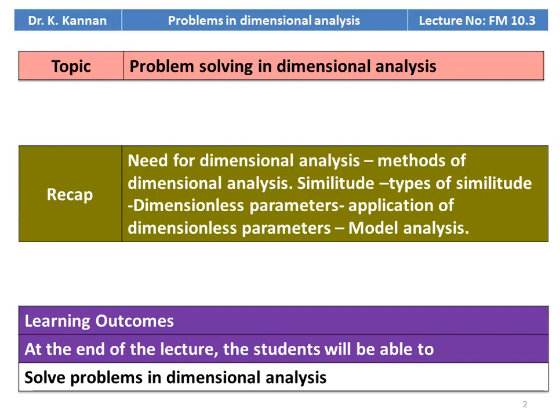We recap from the earlier lecture. In the earlier two lectures, we discussed the theory part of dimensional analysis, the need for dimensional analysis, and methods of dimensional analysis. We discussed the Rayleigh method and the Buckingham Pi method. We also discussed similitude and types of similitude, dimensionless parameters or non-dimensional numbers, application of dimensionless parameters, and model analysis.